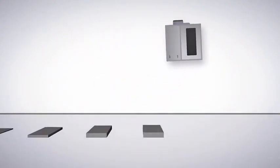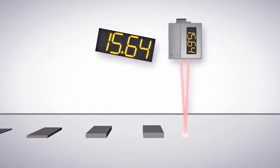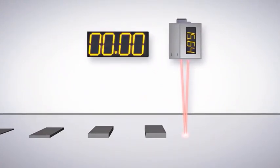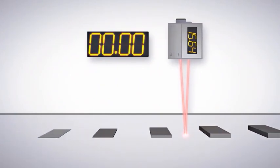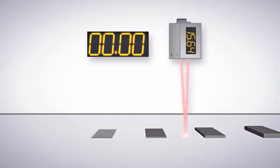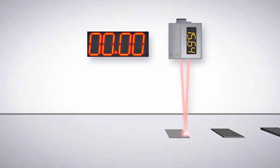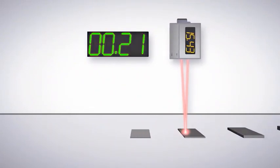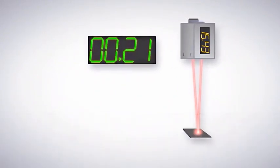Minimum object separation, or MOS, refers to the minimum distance the target must be from the background to be reliably detected by the sensor. MOS is the more valuable specification for discrete applications because it captures dynamic repeatability by measuring different points on the same target at the same distance, giving you a much better idea of how the sensor will perform in the real world.